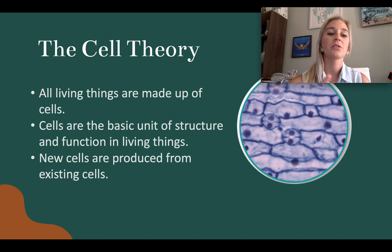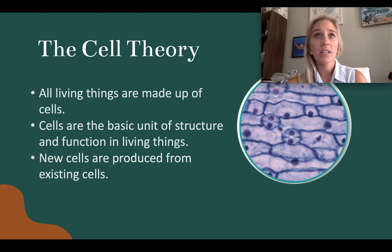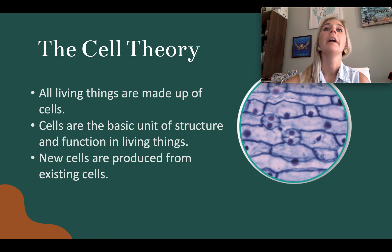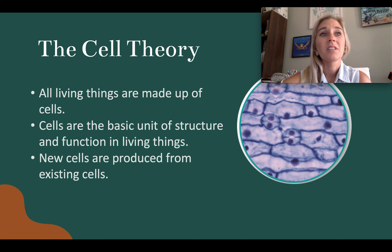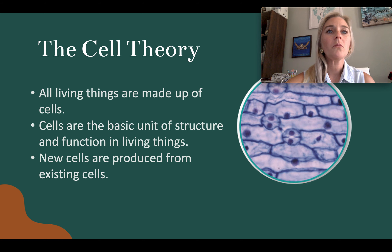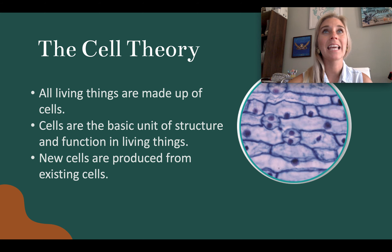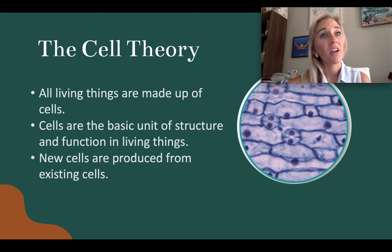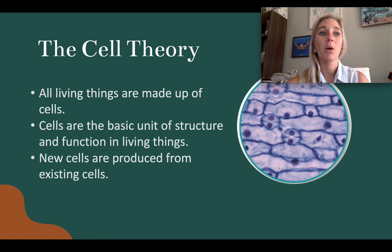The cell theory has three main parts: all living things are made of cells; cells are the basic unit of structure and function; and new cells are produced from existing cells — they don't just magically appear. These ideas came about as new technologies, like the microscope, were developed.